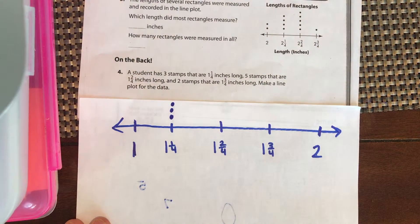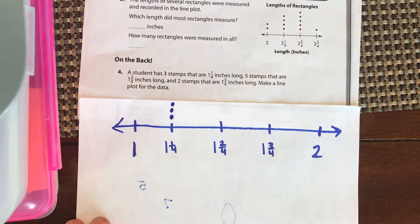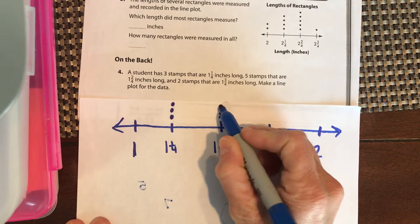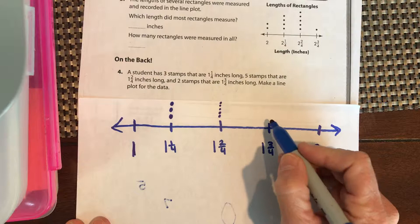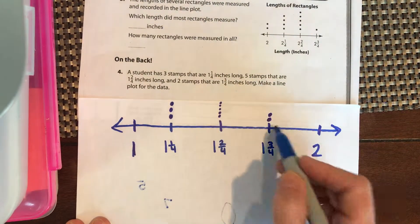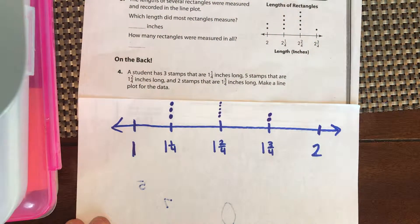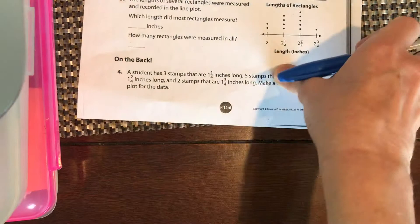Now plot five stamps at one and two-fourths inches and two stamps at one and three-fourths inches. You should have five dots at one and two-fourths — I didn't leave myself enough room on the paper — and two dots at one and three-fourths. So your final line plot shows three, five, and two dots. Good job, see you tomorrow!